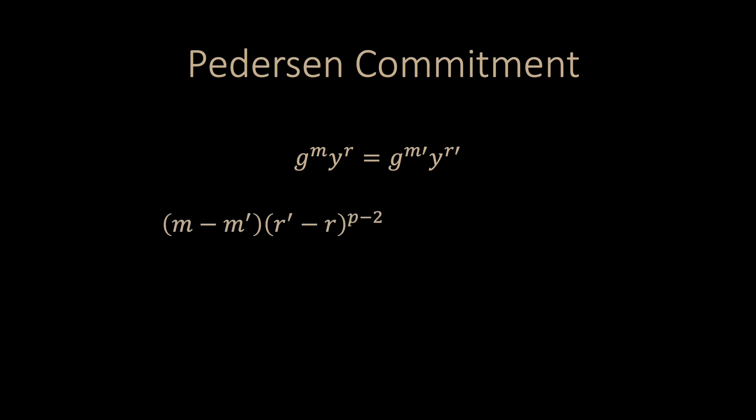Then we can compute the expression (m - m') times (r' - r) to the power of p minus 2. This can be done efficiently with square and multiply algorithm. This expression is in fact x under modulo p minus 1. But this means that we can compute the discrete logarithm of y efficiently, and we reach a contradiction.